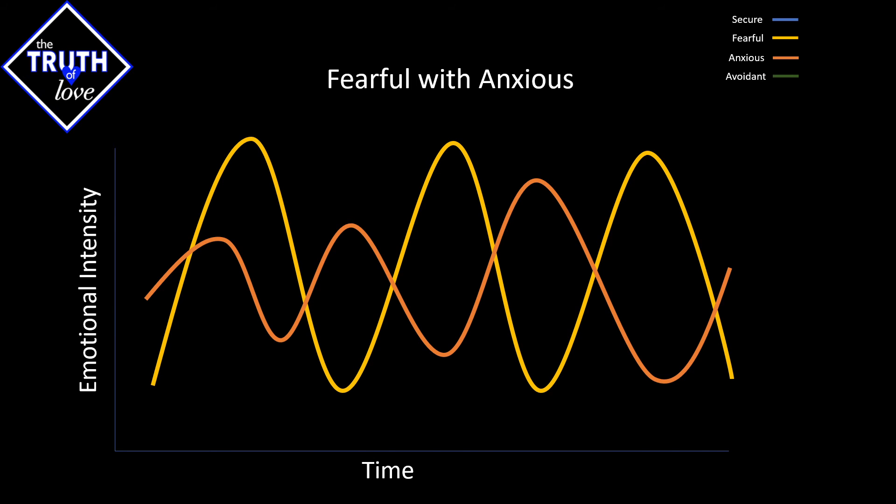Something interesting happens when we start mixing in the insecure attachment styles, specifically fearful and anxious. What you'll notice is that the fearful attachment style has the exact opposite effect that the secure had, where the intensity of the anxiously preoccupied individual tends to increase in that relationship. Their main reason is that the anxious individual is constantly looking for external gratification. That external gratification can be felt in a low and it can be felt in a high.